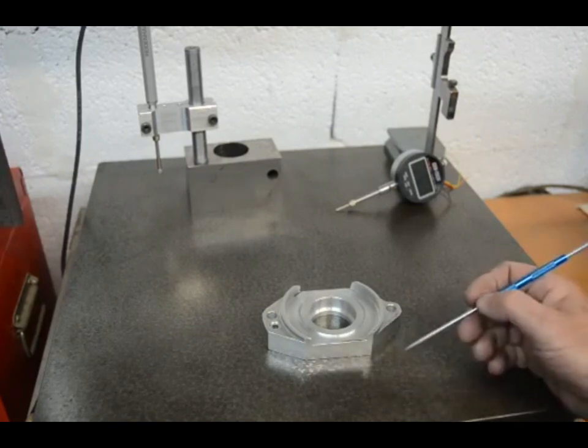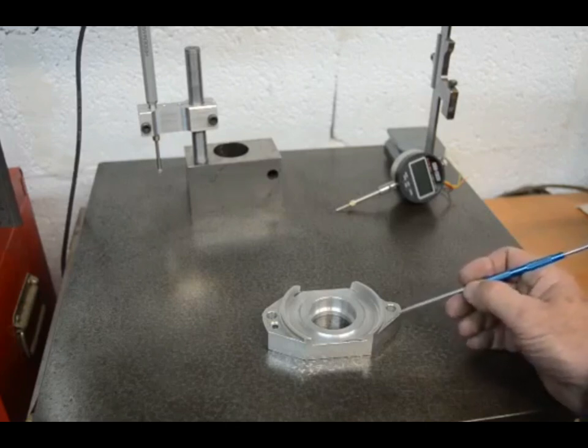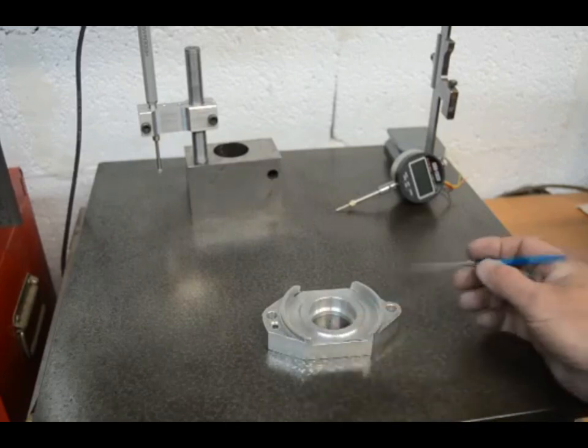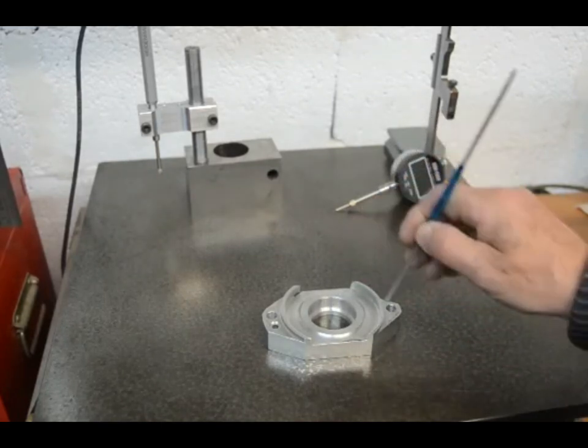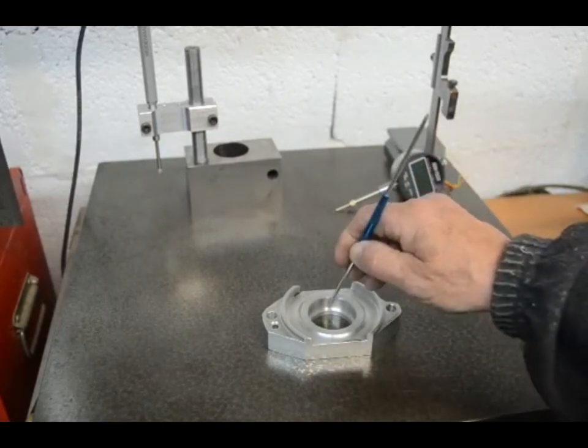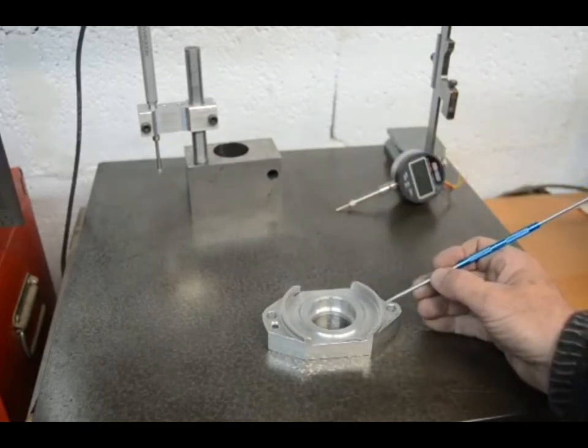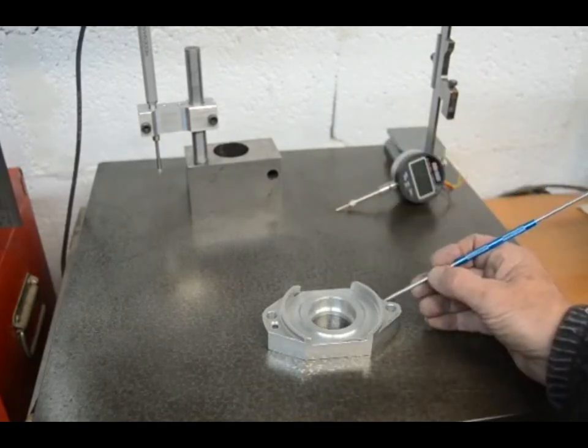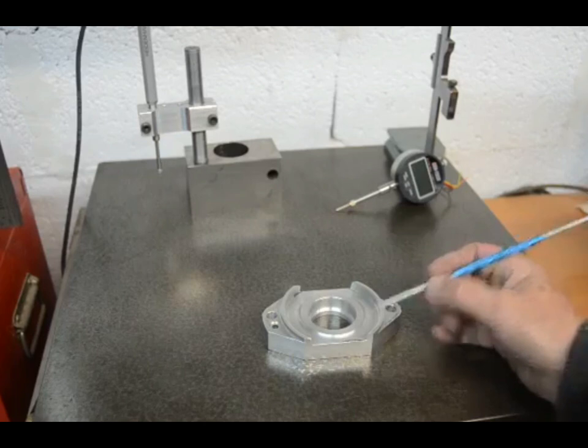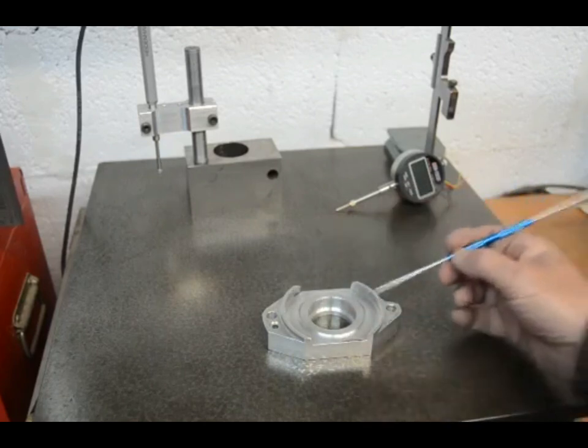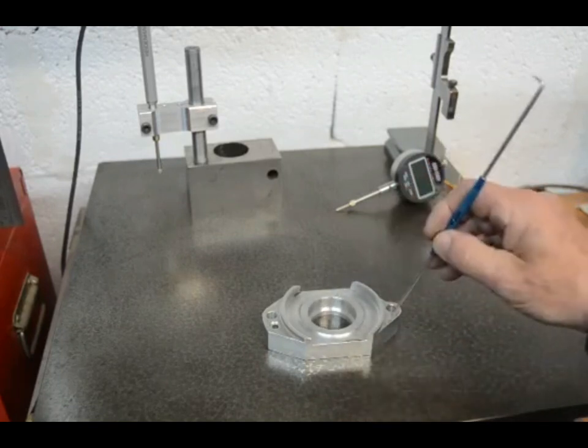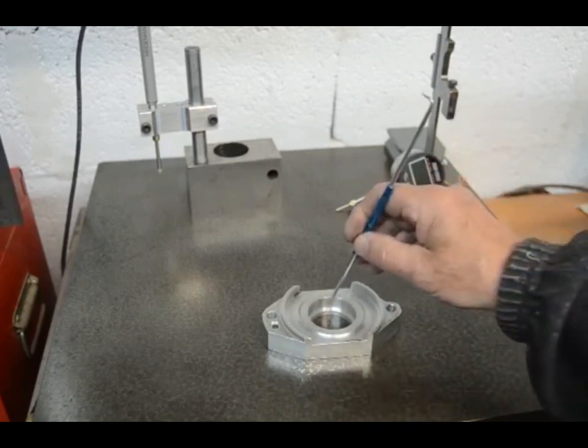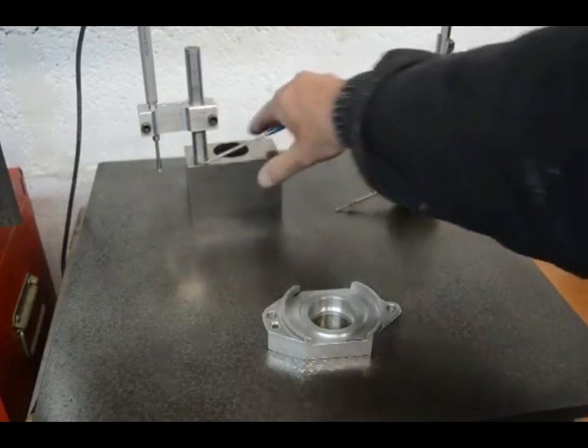Now the most important measurement that I need is, if we consider this surface to be a reference, then it's the depth of this surface from here that is the important dimension that I want. I'll also just out of interest see how deep this surface is and this one here, but those two are not as important as the distance from here to there.